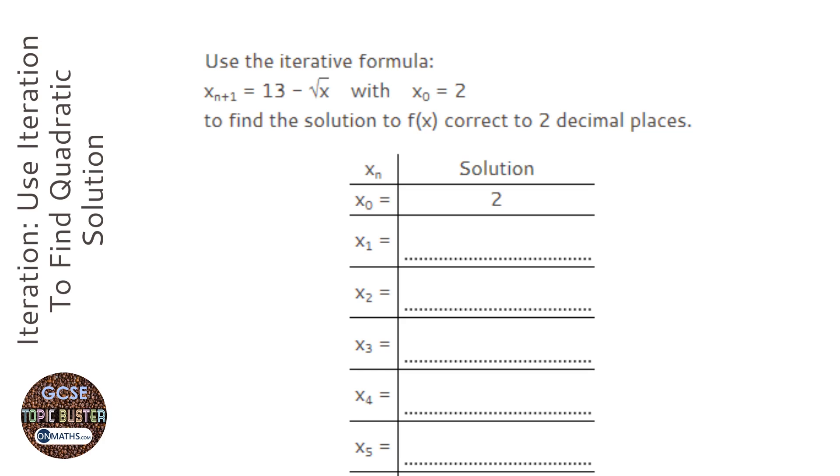You will always be given an iteration formula if you're asked to do iteration. We're given one here: to get to the next number we do 13 minus root x_n. That tells us how to get to the next one, the closer answer. It tells us here to start at two, so we start at two and then work from there.